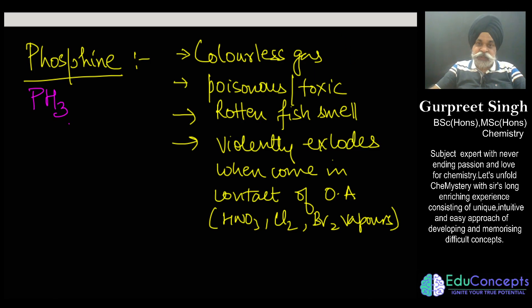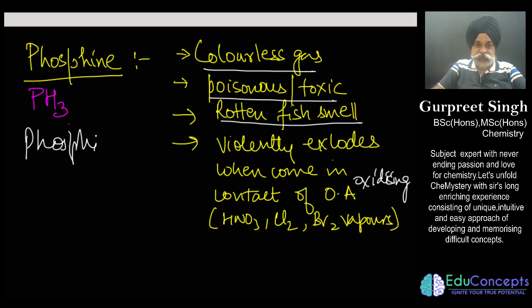Let me tell you that this particular gas phosphine is colorless, toxic, and has a dirty rotten fish-like smell. It violently could explode when it comes in contact with some oxidizing agent like nitric acid or fumes of chlorine or bromine—it violently explodes. This particular gas which we call phosphine.